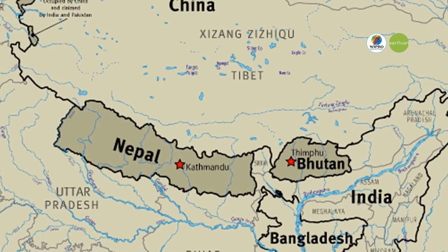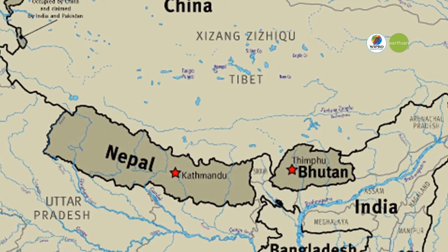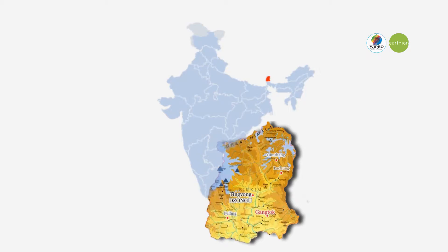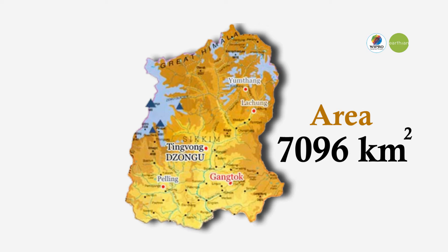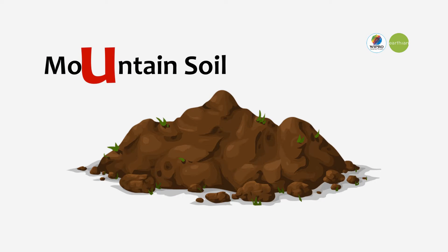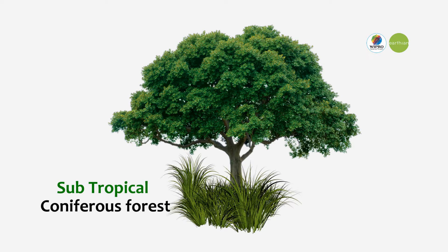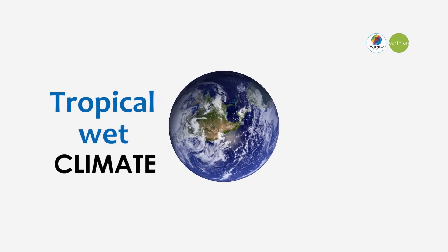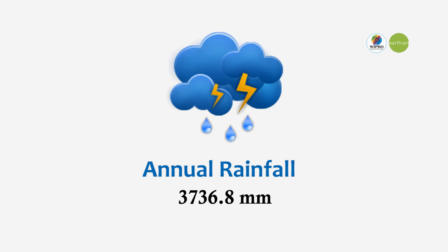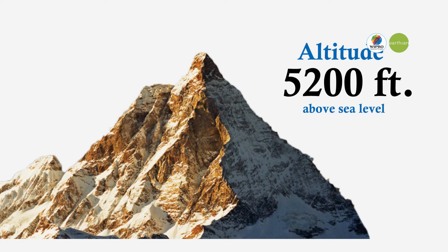Sikkim is a beautiful and second smallest state of India, located at 27.5 degrees north and 88.5 degrees east, with a total area of about 7,096 square kilometers. Our state has varied culture and tradition, holds mountain soil with subtropical coniferous forest and tropical vegetation. The tropical wet climate brings an annual rainfall of 3,736.8 millimeters, with an altitude of 5,200 feet above sea level.